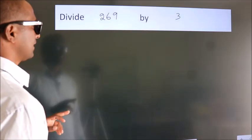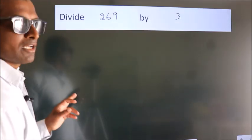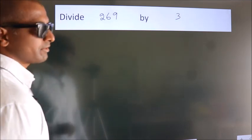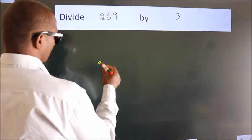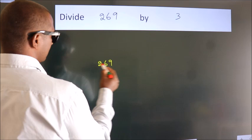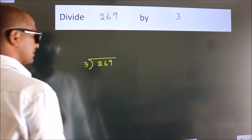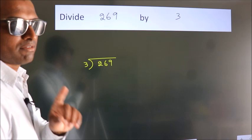Divide 269 by 3. To do this division, we should frame it in this way. 269 here, 3 here. This is your step 1.